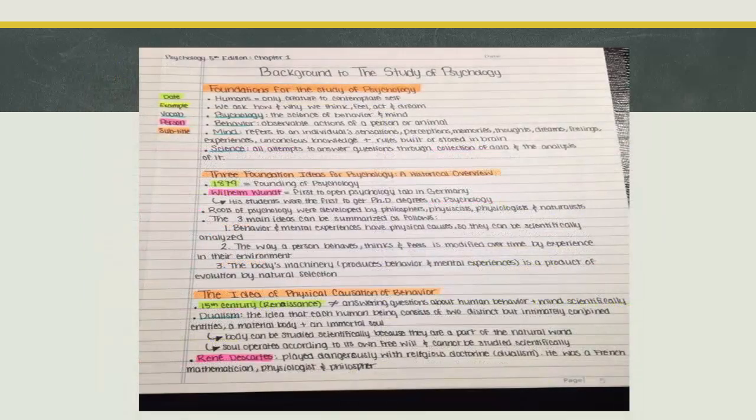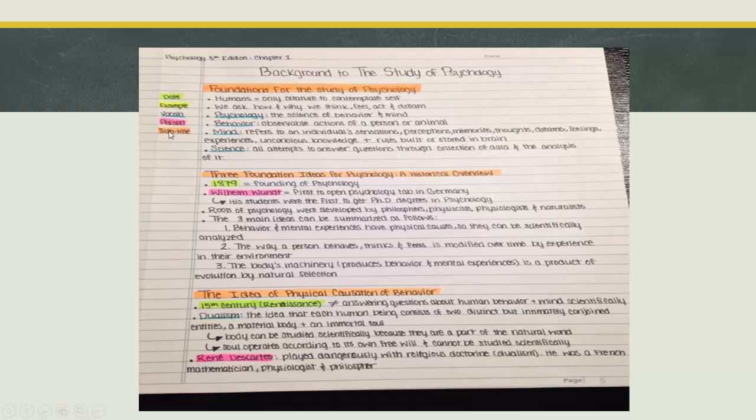I like how this student here, what they did was over on the left hand side they color-coded their highlighting so they know when they take notes that green is a date, yellow is an example, blue is the vocabulary, pink is a person, and then orange is a subtitle. Again though if you do use highlighting you want to be careful that you're not over highlighting. At the same time you want to make sure you're not under highlighting either because sometimes when you go back to review you only focus on the topics that you've highlighted.